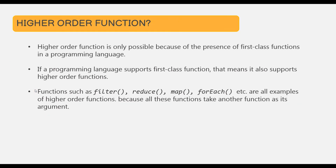Higher order functions are only possible because of the presence of first class functions in a programming language. If a programming language supports first class functions, it also supports higher order functions. In JavaScript, functions such as filter, reduce, map, forEach, etc. are all examples of higher order functions because they all take another function as their argument. We are going to learn about all these functions in great detail, and you will see that they all take a callback function as their argument — that's why they are called higher order functions.